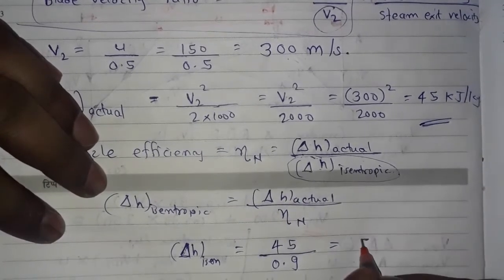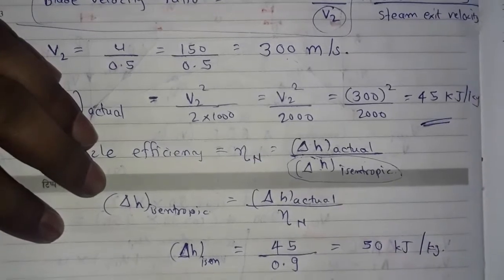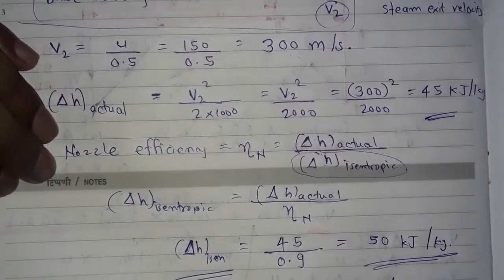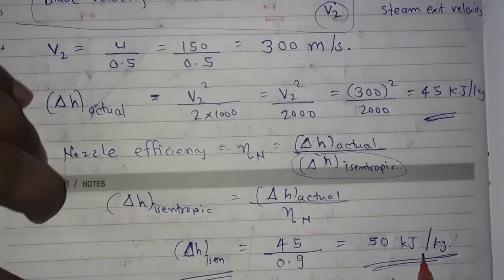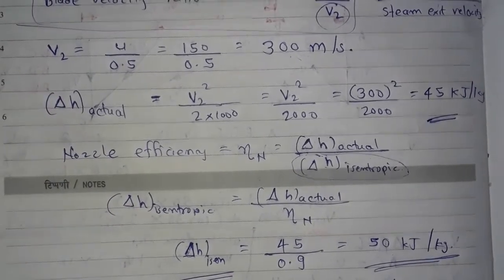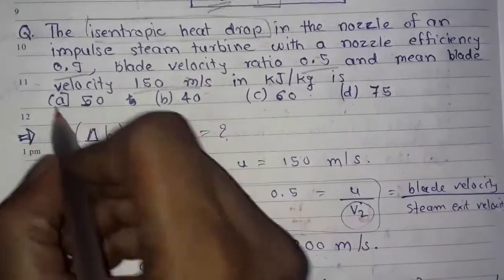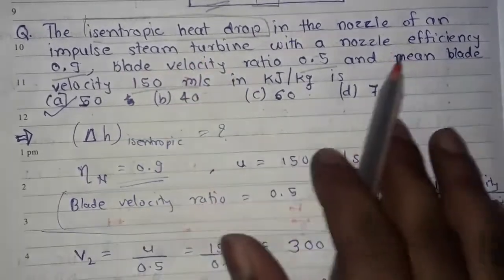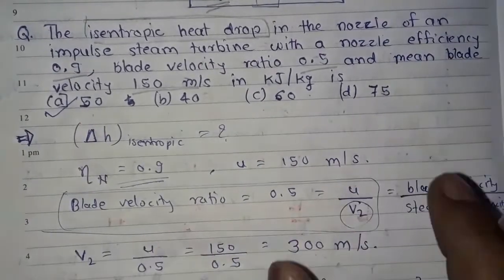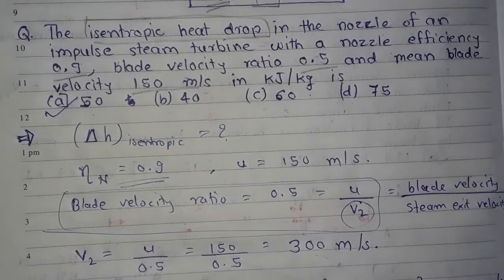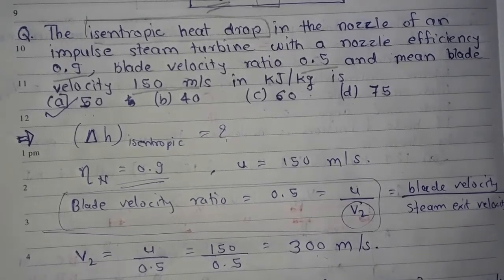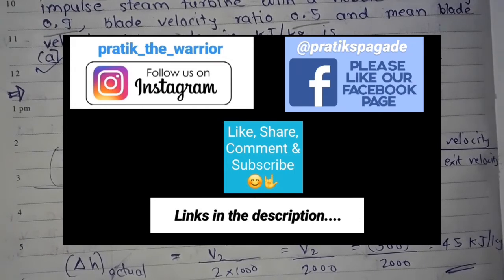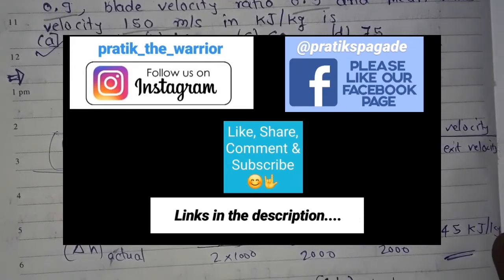After calculating, we get 50 kilojoule per kg. So delta h isentropic is equal to 50 kilojoule per kg, and option A is the correct answer. In this question we learned how to find the isentropic heat drop of the nozzle of an impulse steam turbine. Thank you friends for watching — please like, share, comment, and subscribe to my channel.